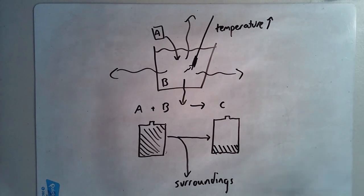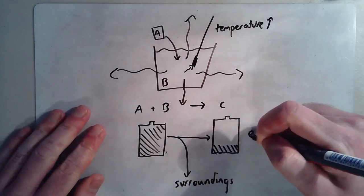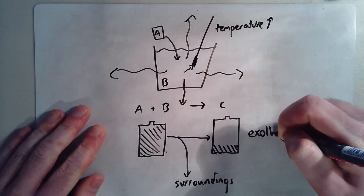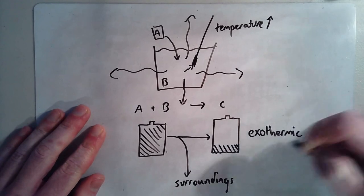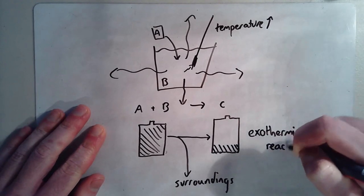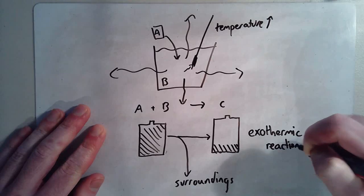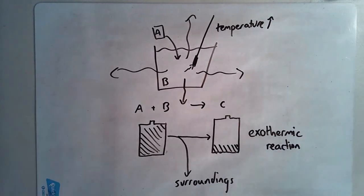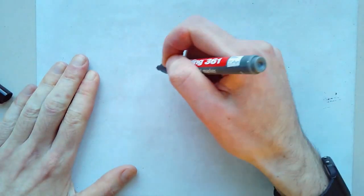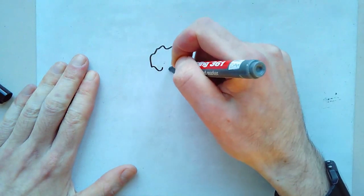We call this kind of a reaction an exothermic reaction or change. It's one in which energy is released to the surroundings. Alright, let's do another one. Let's say I've got some wool, like just mineral wool.